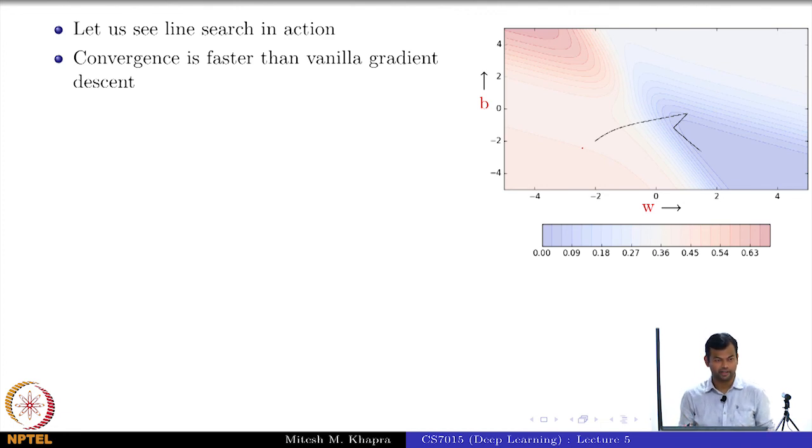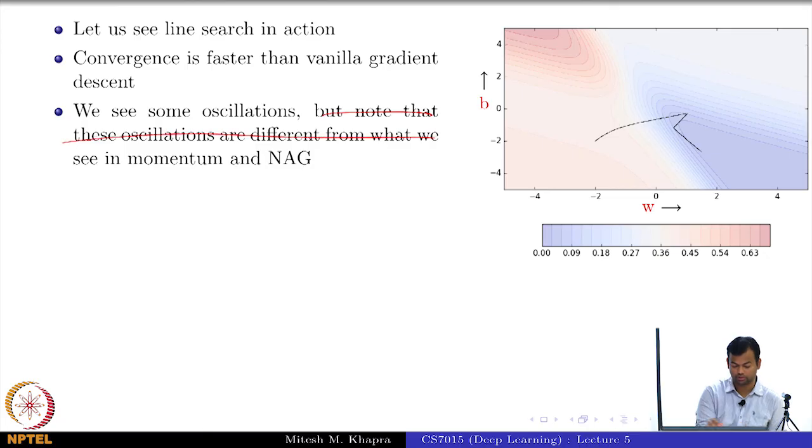Convergence would be faster than vanilla gradient descent, that is obvious. And we see some oscillations, and this statement is actually wrong. We need to remove that.